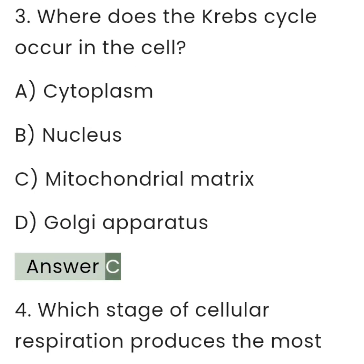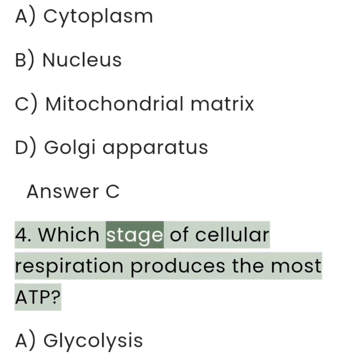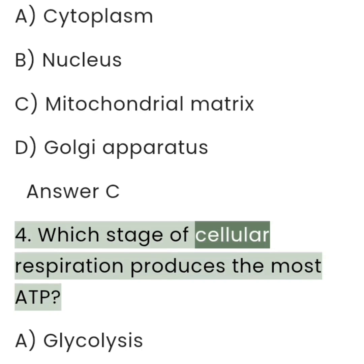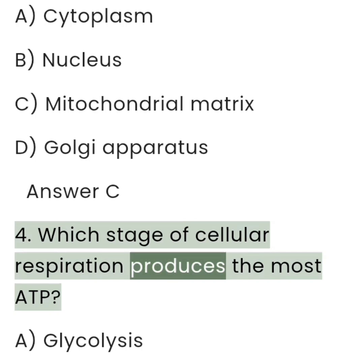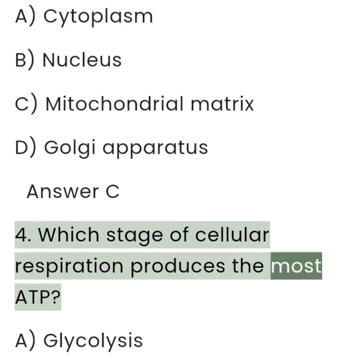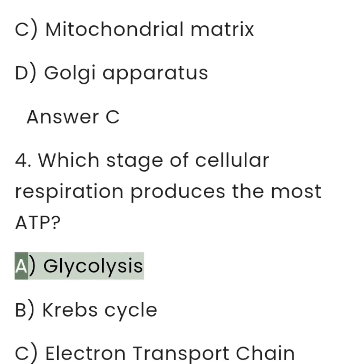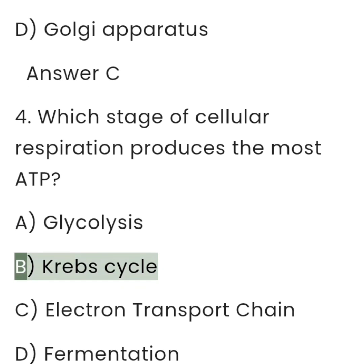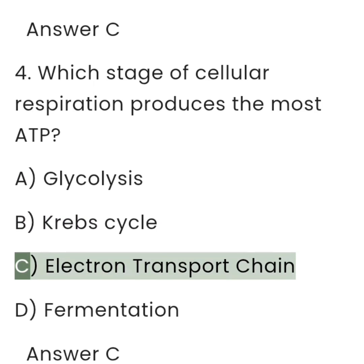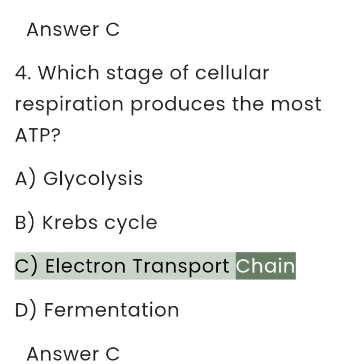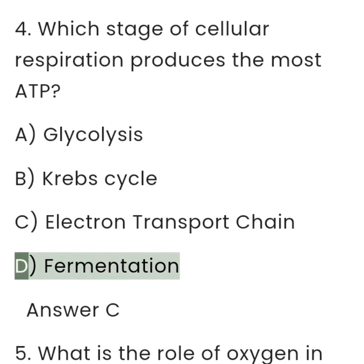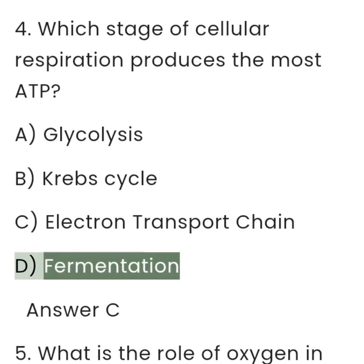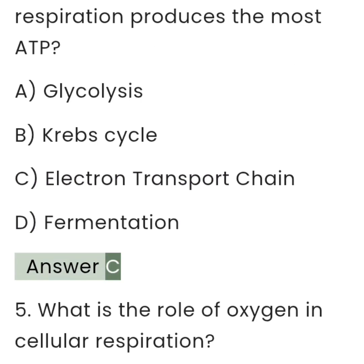Answer: C. 4. Which stage of cellular respiration produces the most ATP? A. Glycolysis. B. Krebs cycle. C. Electron transport chain. D. Fermentation. Answer: C.